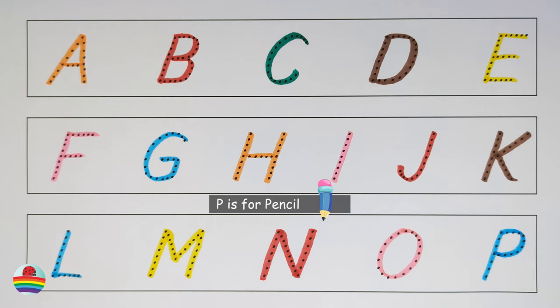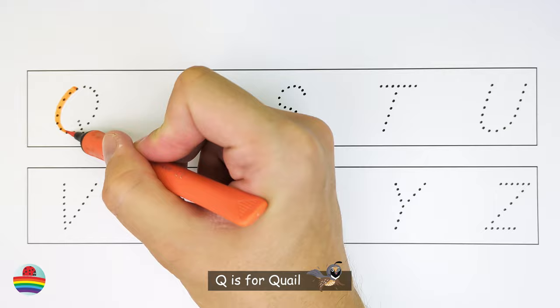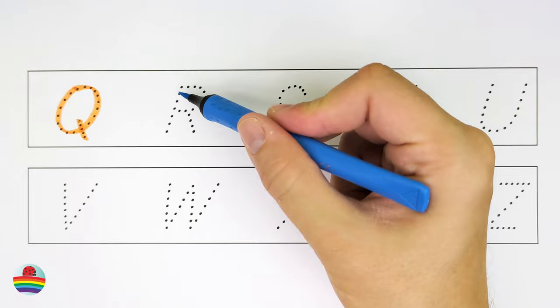Q. Q is for quail. Q. R. R is for robot. R.